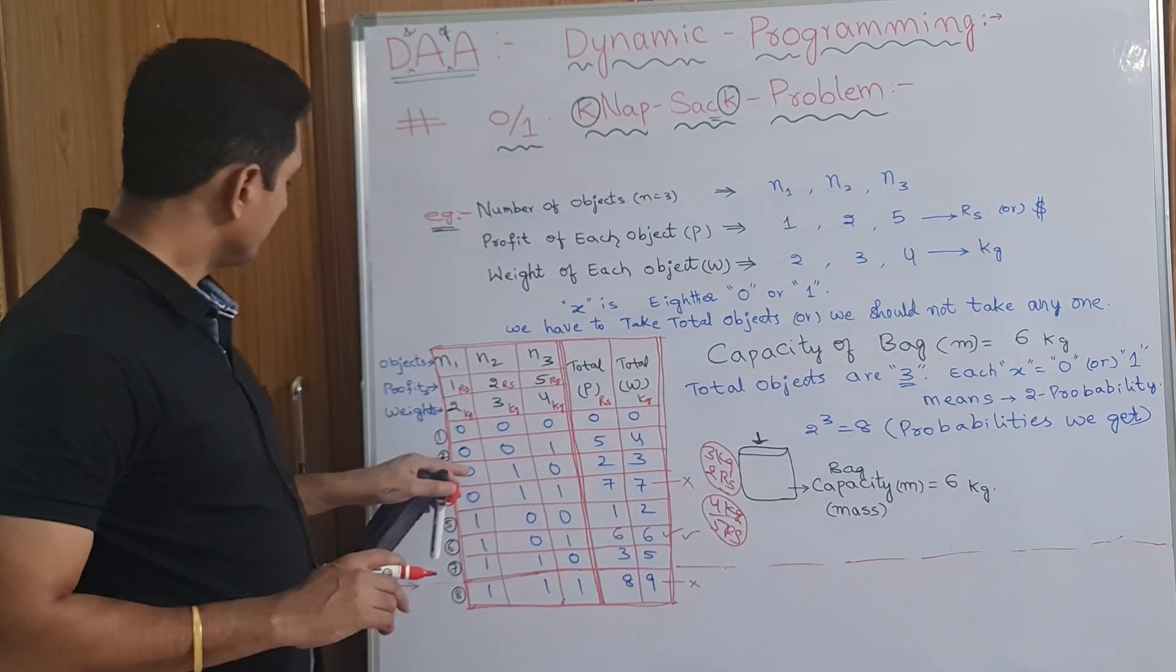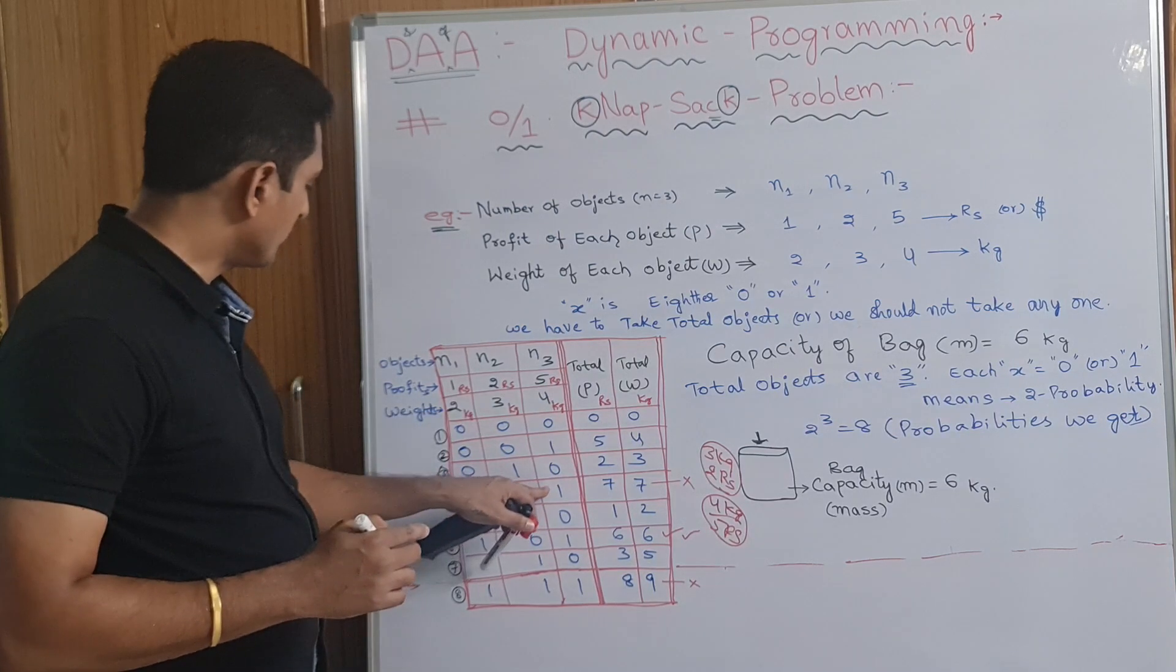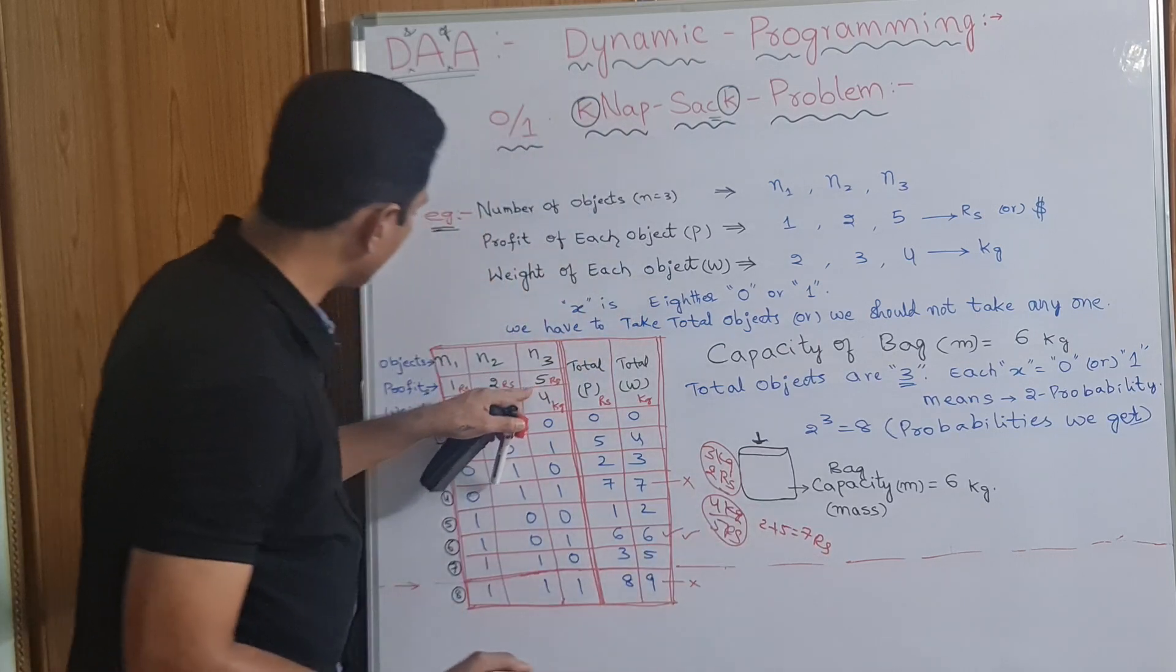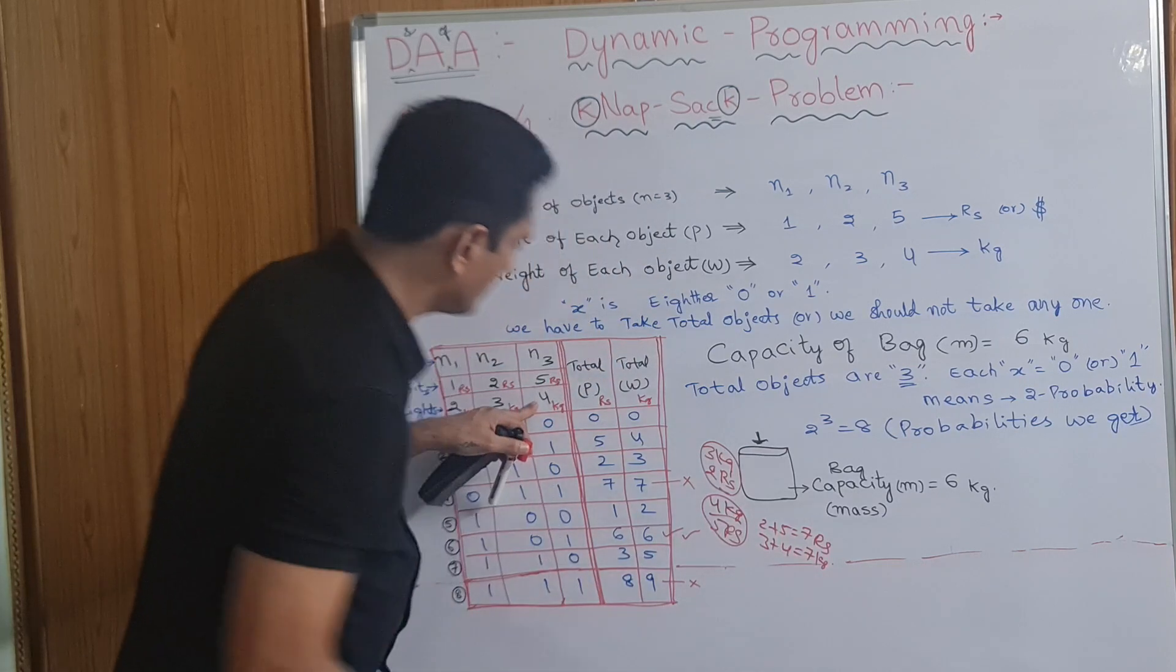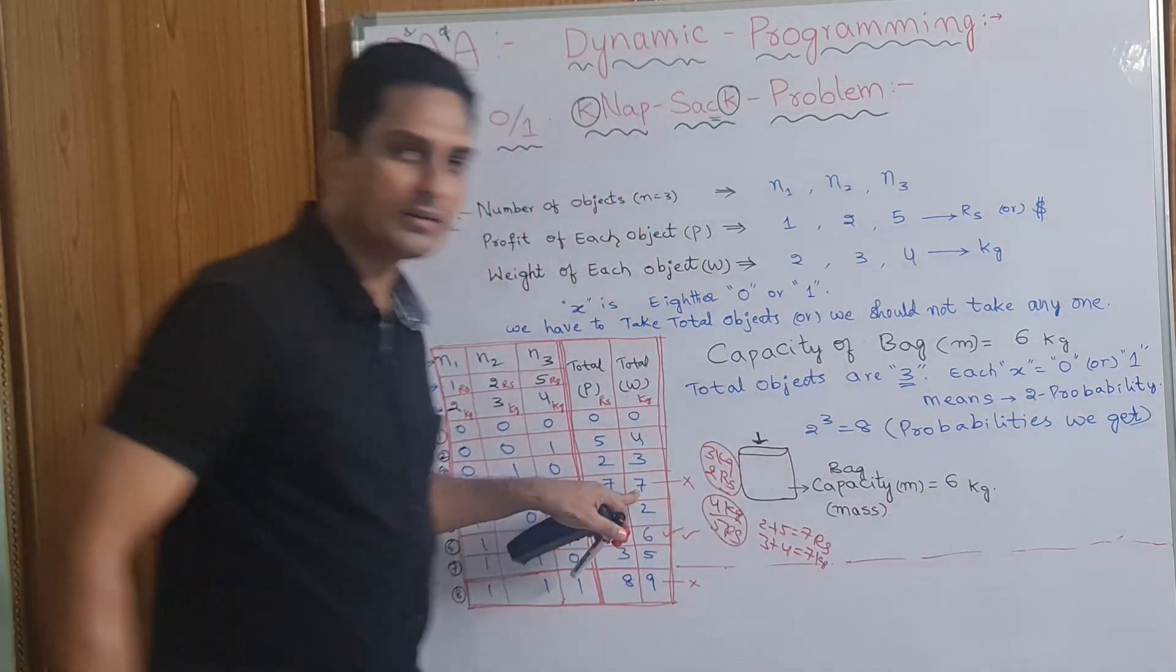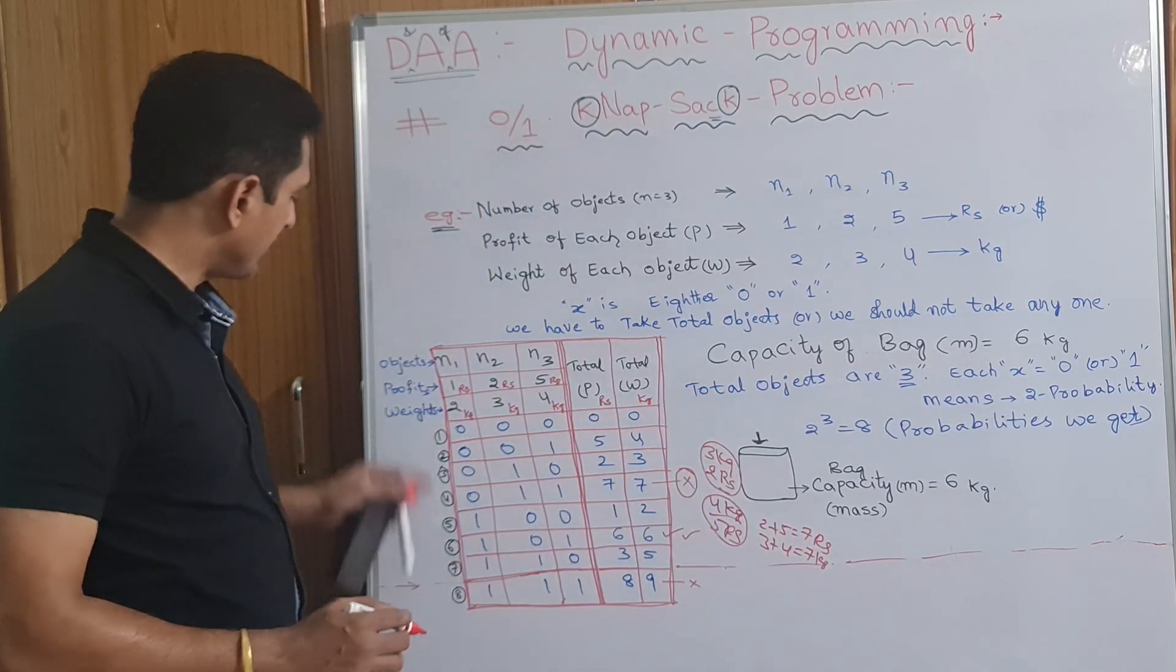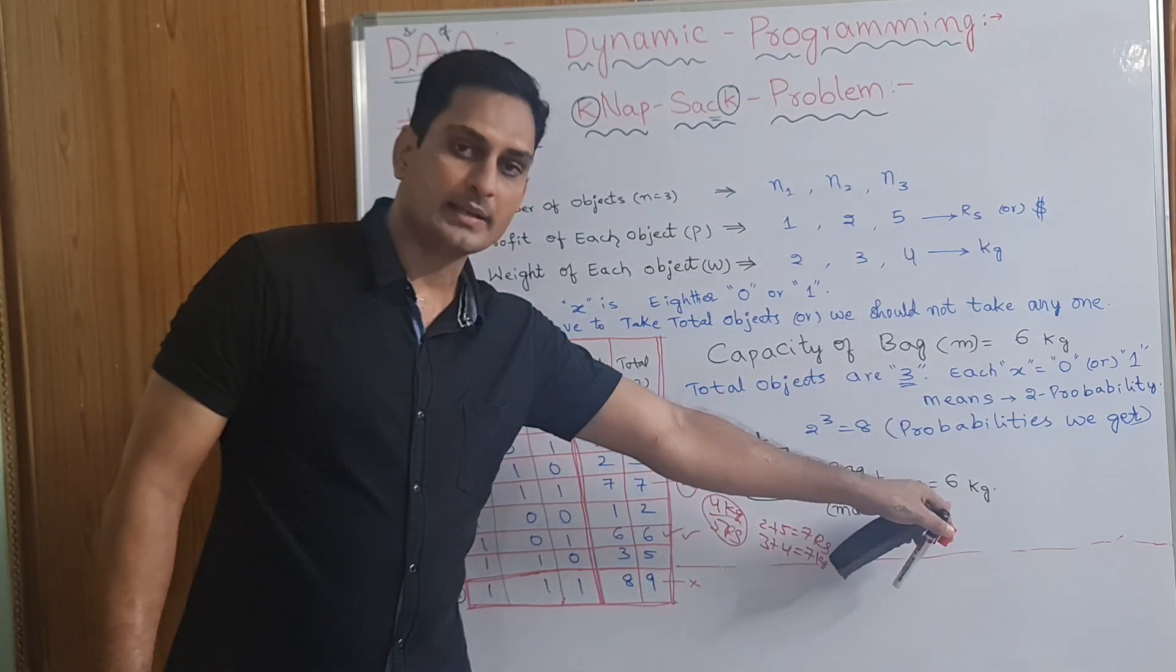So, we need to get more profit. Again, fourth one. 0, 1, 1. 2. You have taken 1, 1. Means this 2 plus 5. 7 rupees profit we get. 2 plus 5. 7 rupees profit and 3 plus 4. 7 kgs bag filled. Actually, this cannot be happened. Because the maximum capacity of the bag is 6 kgs. So, we cannot fill this. So, this is not happened. This is wrong. Probability of 8 out of this 8. This cannot be happened because the maximum capacity of the bag is 6 kgs.